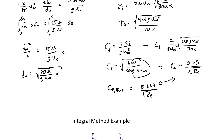Our assumption of a second-order polynomial for the velocity profile gets us within 10 percent accuracy of the exact solution — for a lot of engineering decisions, that's good enough. By comparison, a first-order linear solution gives about 15 percent error, while a third-order polynomial gives about 2.5 percent — better accuracy, but at the expense of being slightly more work.